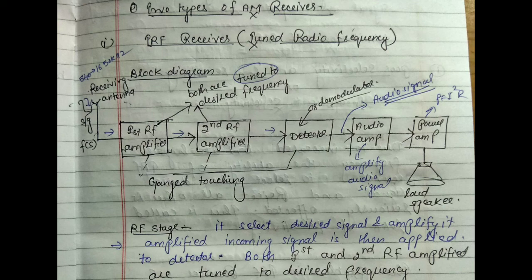Demodulation is the process by which the detector extracts the original signal. The recovered signal is then amplified further by the audio amplifier, followed by the power amplifier.